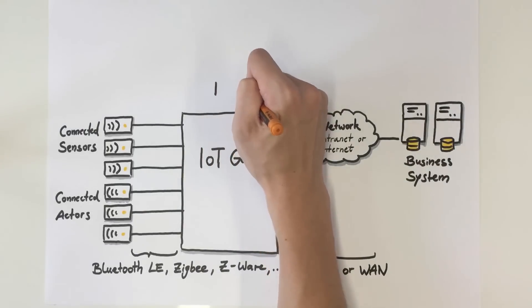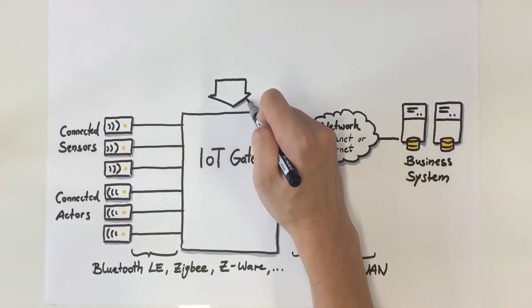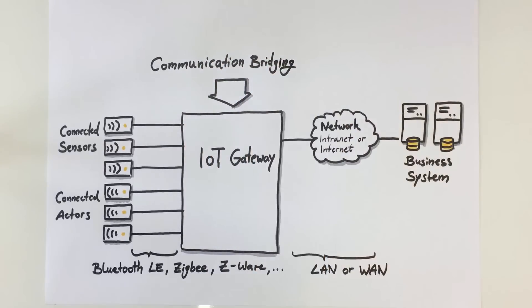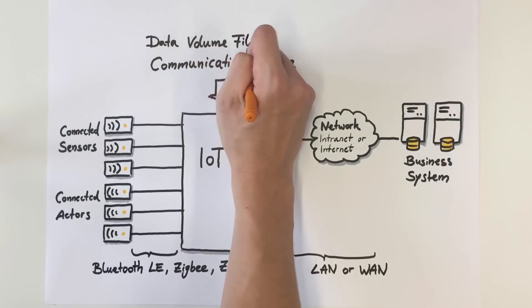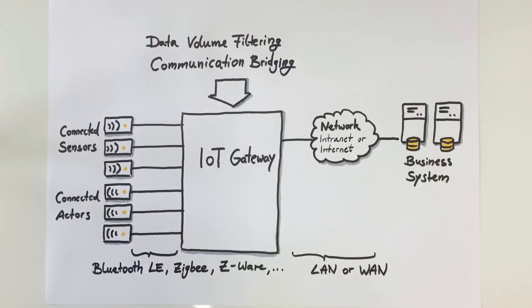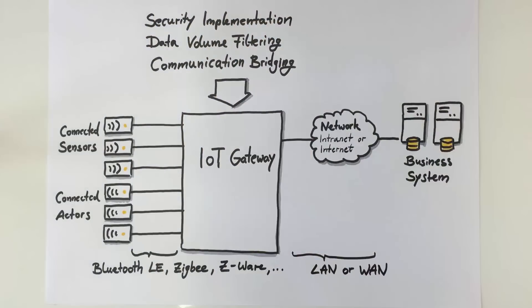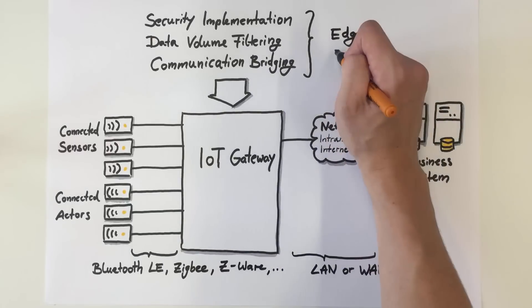So far, we have only talked about the communication bridging, which also helps sensors and actors that are too small or minimalistic to be connected through IoT gateways with remote IT components. However, an IoT gateway comprises a lot of other important capabilities. Given how huge the volume of data provided by sensors can be, one important capability is to filter out data that is not necessary and thus reduce the amount of data forwarded to the backend. Another aspect that can be provided by the IoT gateway is security implementation.